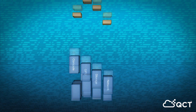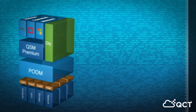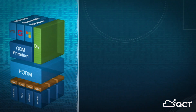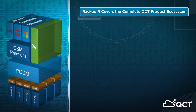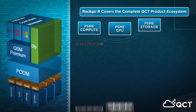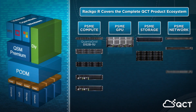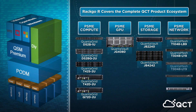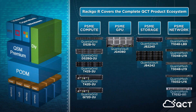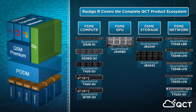By composing logical nodes of resources based on utilization and performance requirements, RackGo R optimizes any infrastructure you build within the QCT hardware ecosystem. Customize an endless array of configurations based on user environment to power a variety of applications and workloads.